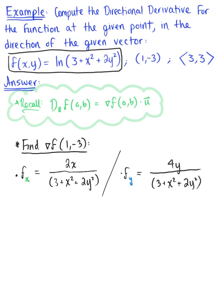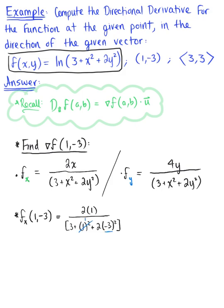Now we want to evaluate each of these at the given point. The partial derivative with respect to x at the ordered pair (1, -3): plugging in, we have 2 multiplied by 1, all divided by 3 plus 1 squared plus 2 multiplied by negative 3 squared. Since 1 squared is 1 and negative 3 squared is 9, we have 2 divided by 3 plus 1 plus 18, which is 2 over 22, simplifying to 1 eleventh.